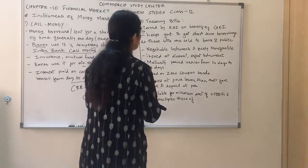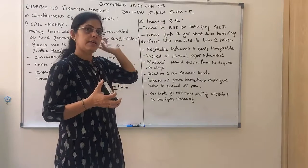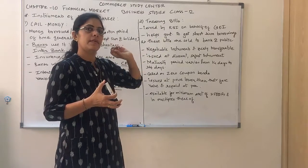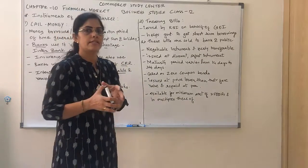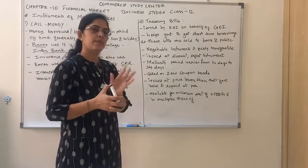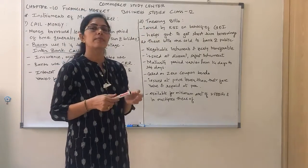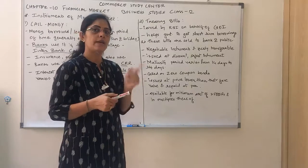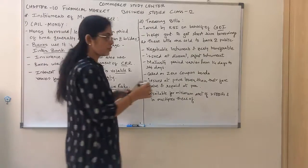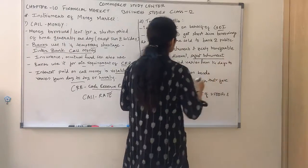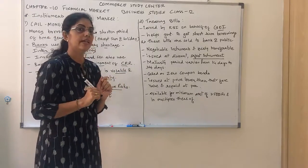The second instrument of money market is treasury bills. In the money market, finance has to be arranged for a short period of time, so all instruments relate to short periods. Treasury bills are issued by the Reserve Bank of India on behalf of the Government of India. So we can say these are the safest instruments — because they are issued by RBI, people will take them without hesitation or insecurity.